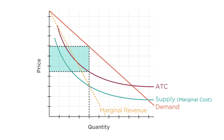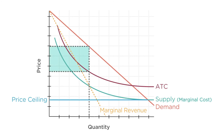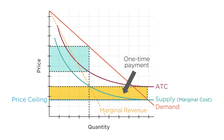But say the government introduces price regulation and forces this natural monopoly to charge the price given by where supply equals demand. This price is lower than the firm's average total cost, so the firm will go out of business — it can't continue selling its good for less than it costs to make. So now we have a problem: if we let the firm do what it wants, prices are too high; if we regulate at the competitive price, we drive the firm out of business. The answer is to combine the regulation with a one-time payment to the natural monopoly to ensure it can break even. This is called a lump sum subsidy.